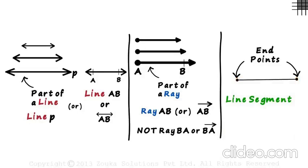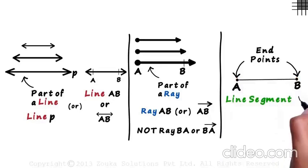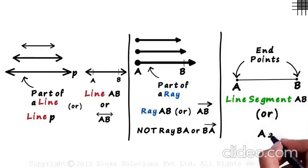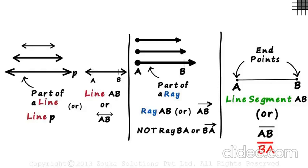If the endpoints are A and B, this can be called line segment AB, or it can also be written as AB with a line segment over it. And yes, we can also write this as BA with a line segment over it.